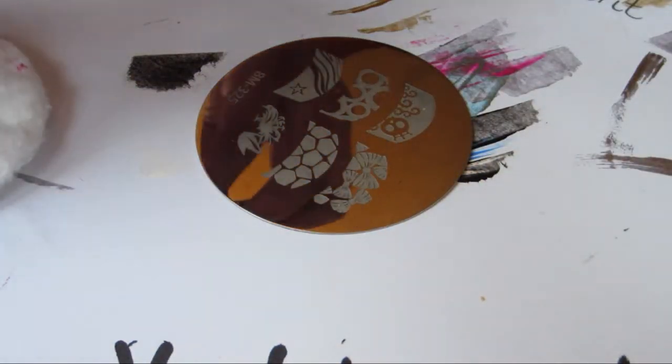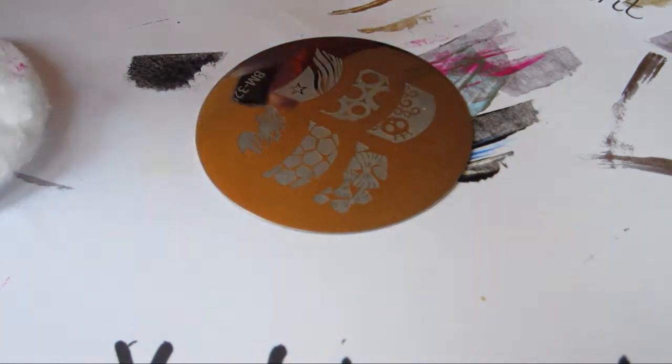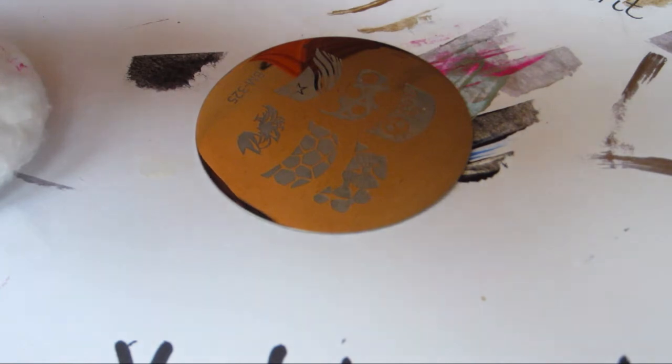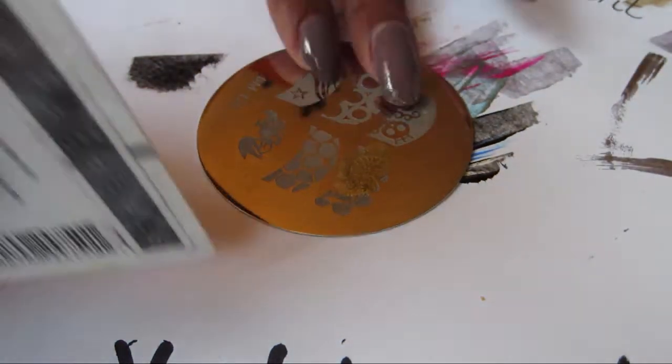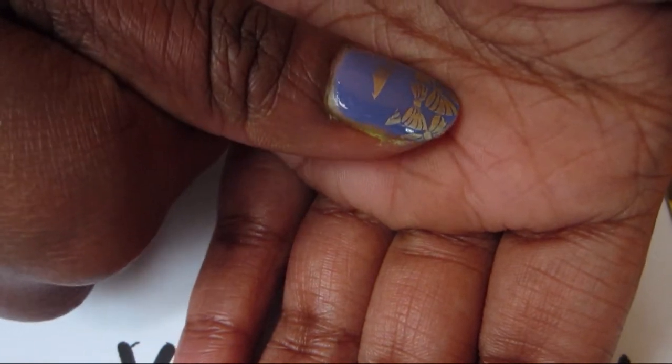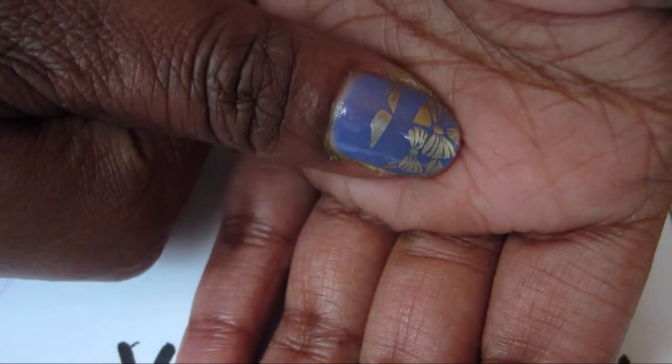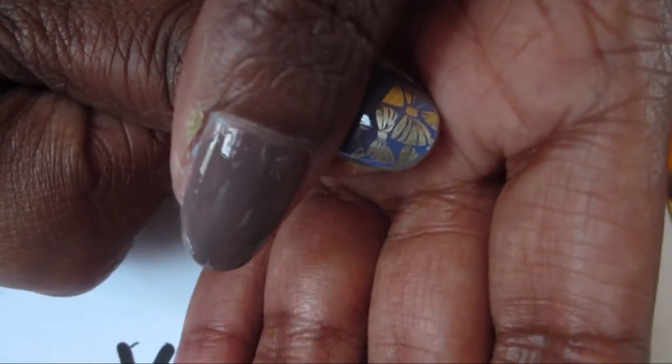So I'm going to use my Sally Hansen Quick Color Pen in gold. So the bows look great. Besides for my mistake right there. These look really nice.